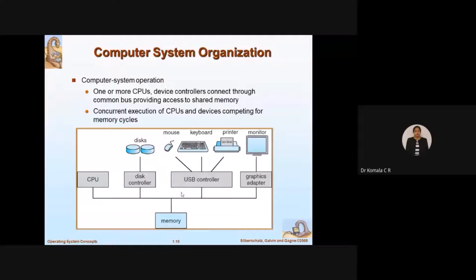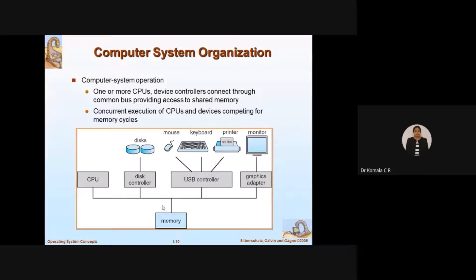All these are connected via a single common bus. The same bus is used for all operations, providing access to shared memory. The same memory is shared among all devices — for example, a 10-kilobyte memory space is shared among these devices. So in a computer system organization, one or more CPUs are connected along with controllers via the common bus to a shared memory. The next step involves concurrent execution of CPUs and devices competing for memory cycles.